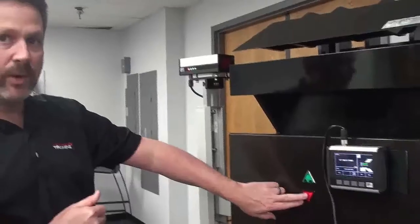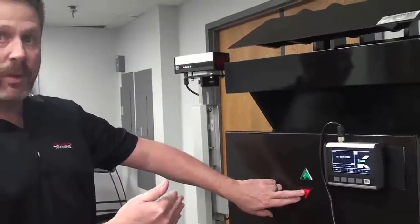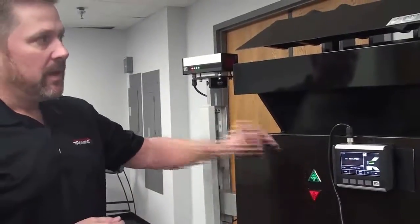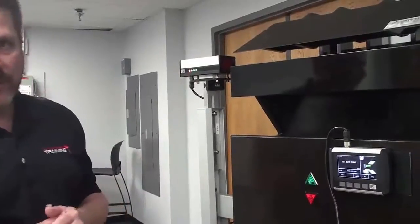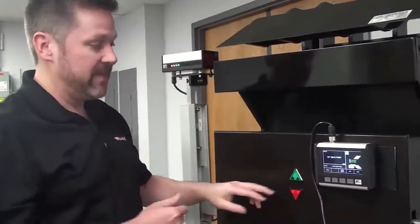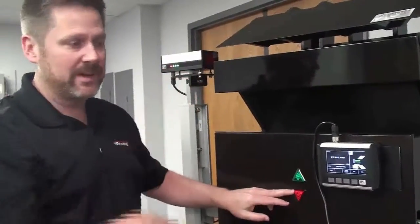So what that test just did is it verified that when I pushed the clamp pedal, FoldGuard saw that I was trying to lower the clamp. It attempted to lower the clamp, and then it saw the movement from the encoder on the backside.